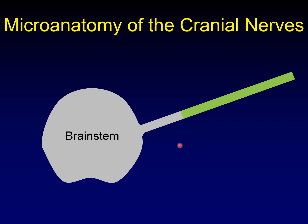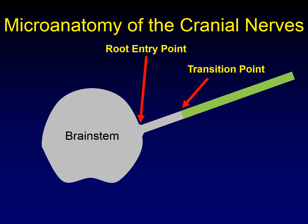You might think that the entirety of the nerve — this is peripheral nervous system — so why isn't it all covered by Schwann cells? It turns out that it's not. The root entry point is the anatomic point where the cranial nerve is seen to emerge from the brain stem. The transition point, however, is where we move from oligodendrocyte-created myelin to Schwann-created myelin, and these are not the same spot.